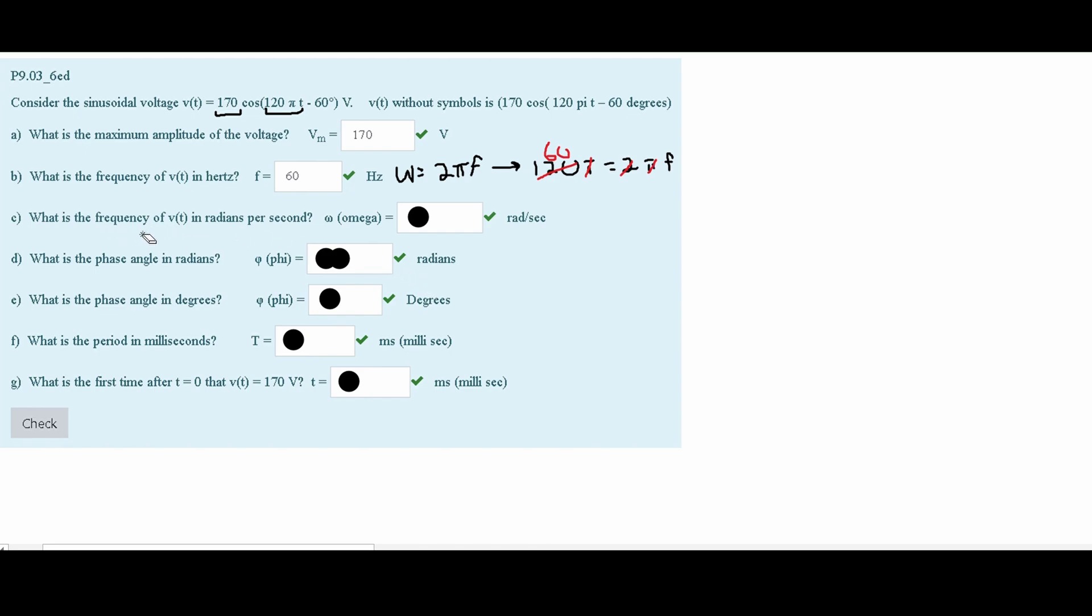Next, we are asked what is the frequency of Vt in radians per second, so now we have to find the omega for it. Well, we can plug our frequency back in, or we know that this 120π is the frequency, because that is the frequency in the sinusoidal voltage equation. So what we are going to have to do is multiply 120 by π, and this is going to give us approximately 377 rads per second.